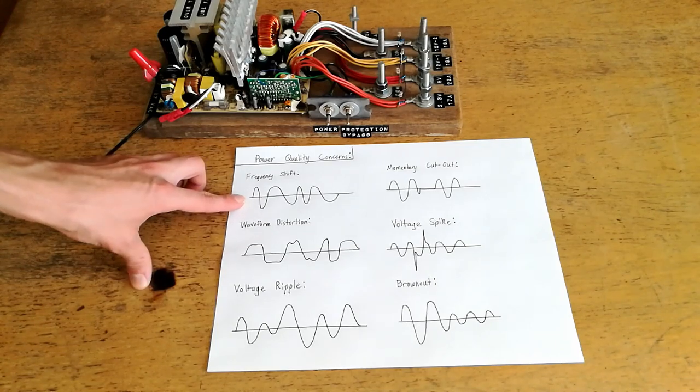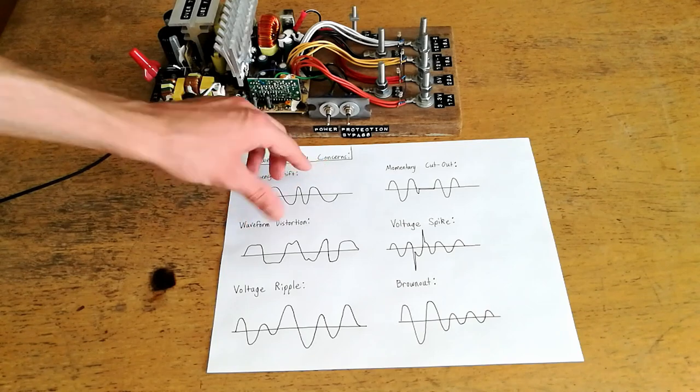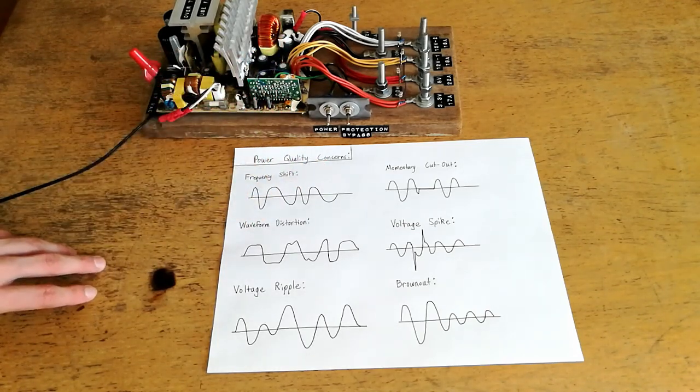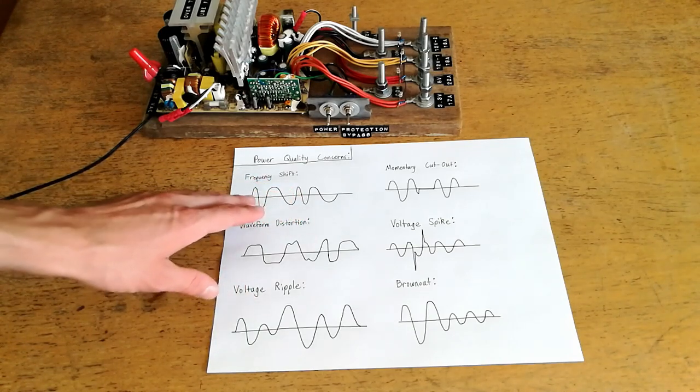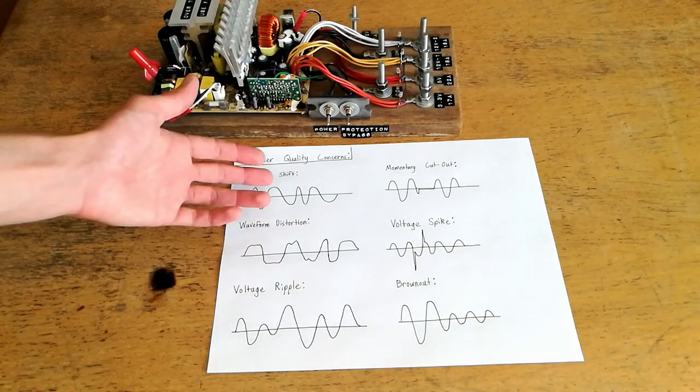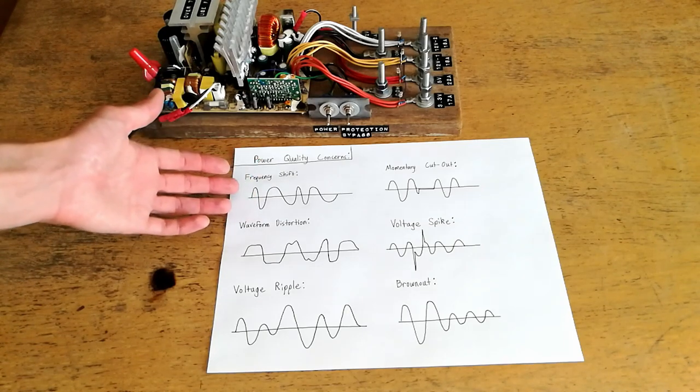One issue is shifting frequency where the actual period of oscillation or frequency of the output voltage changes with respect to time and this can result in problems for some devices, particularly devices which rely on the AC frequency to operate at a specific speed like induction motors, synchronous motors, and other similar devices.